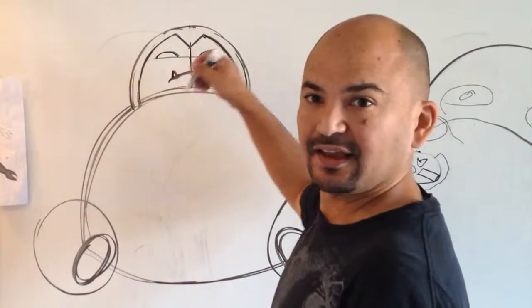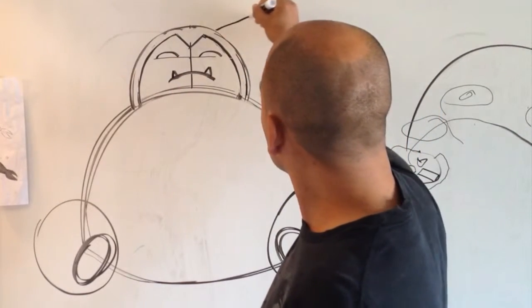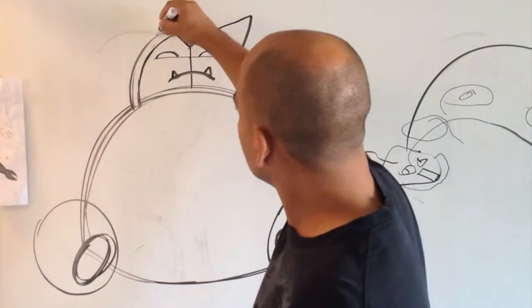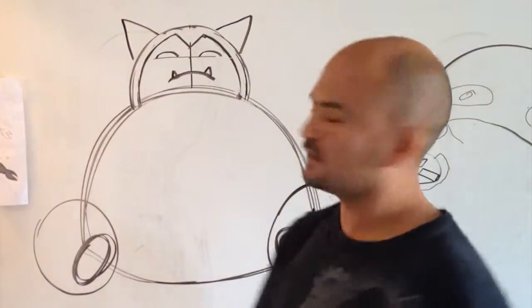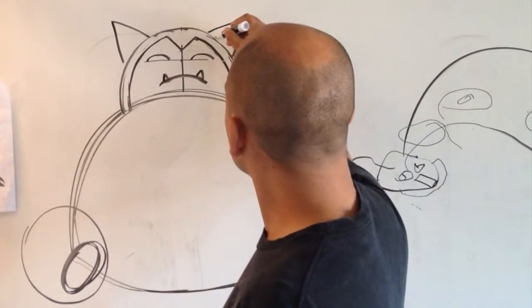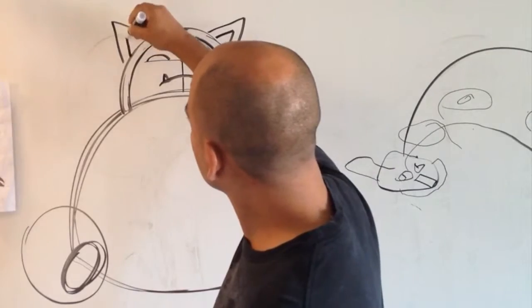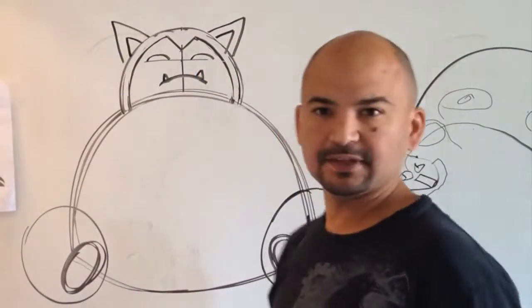Okay. On the top of this head, we're going to draw two triangles. One big one there. And one big triangle there. And then inside those triangles, we're going to draw a smaller triangle.